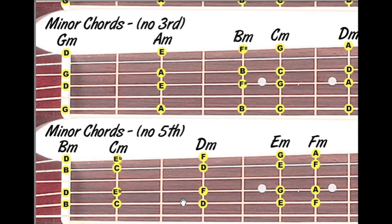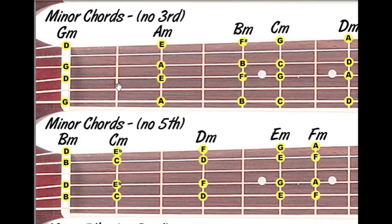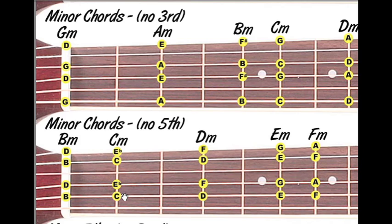Looking at my minor chords here — what's going on with this one — this is minor chords with no third. That means this second string here, you're not going to be playing, and your fifth string, you're not going to be playing. So you're omitting the third, which isn't really a minor chord. You're basically playing just roots and fifths of the chord, but it can substitute as a minor chord.